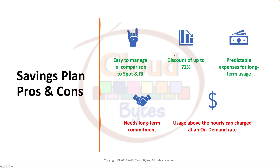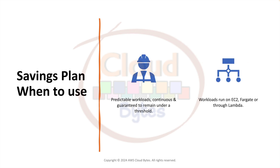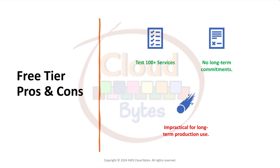Pros of savings plans: up to 72% discount and predictable expenses since you are making a commitment. The cons: requires a long-term commitment of one or three years, and there is a cap on hourly usage — any excess compute beyond the commitment is charged at the on-demand rate, which is more expensive. Use savings plans when you have predictable, continuous workloads. If running EC2, Fargate, and Lambda, use the compute savings plan; if EC2 only, use the EC2 savings plan.